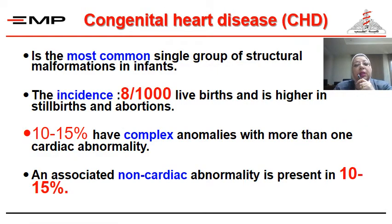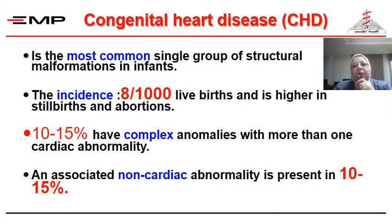Identify the complications of such abnormalities and enumerate the treatment options available for each cardiac abnormality. In general, congenital heart disease is the most common single group of structural malformations in infants. The incidence is about 8 in 1000 live births and is higher in stillbirths and abortions. That is why when a young mother is pregnant and she has a stillbirth or the pregnancy doesn't continue, and they are so sad, we say please don't be sad because maybe that baby had multiple congenital anomalies.